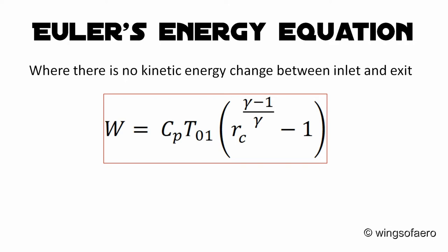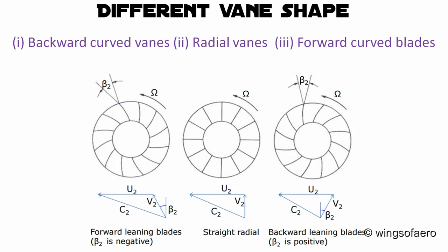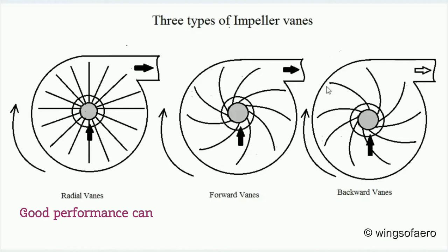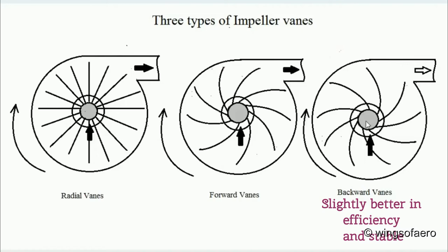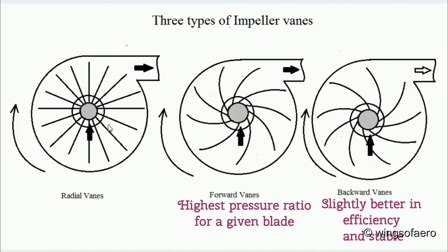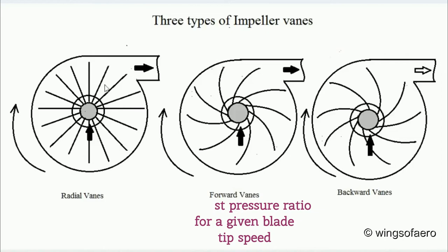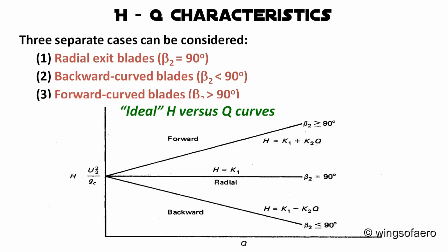Centrifugal effects on a curved blade create a bending moment and produce increasing stress, which reduces the maximum speed at which the impeller can run. Good performance can be obtained with a radial impeller blade. Backward curved blades are slightly better in efficiency and are stable over a wide range of flows compared to radial or forward curved blades. Forward curved blades can produce the highest pressure ratio for a given tip speed, but are inherently less stable, have a narrow operating range, and lower efficiency than backward or radially curved blades.